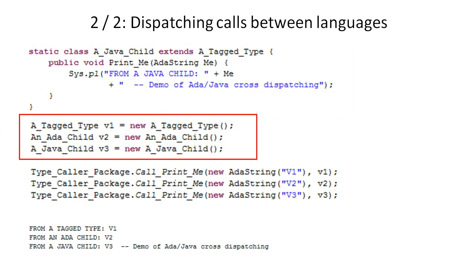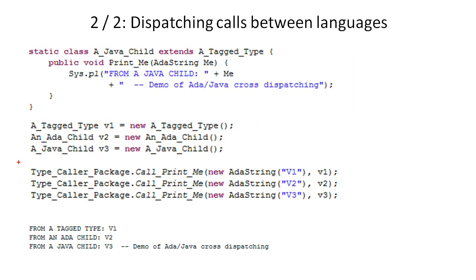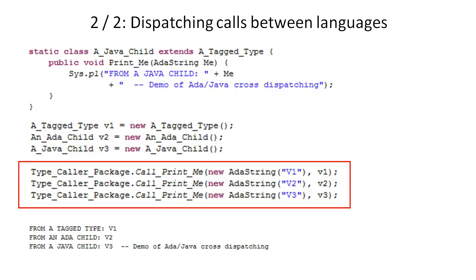Three objects are created: v1, v2, and v3. The ADA service called print me is invoked for each. Because ADA contains methods to satisfy both v1.print_me and v2.print_me, the runtime dispatches the print me message to v1 and v2 on the ADA side. However, on the ADA side there is no object called v3, and therefore the print me message is dynamically dispatched to the Java object.